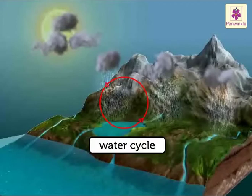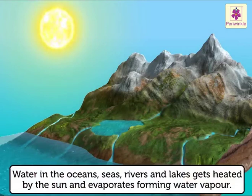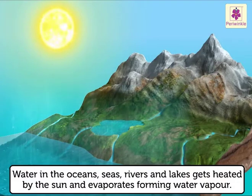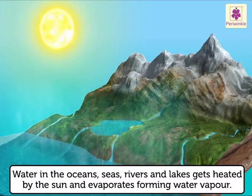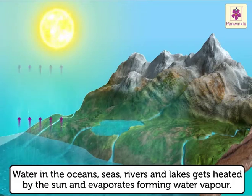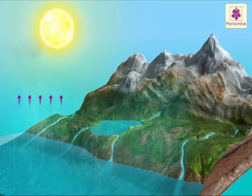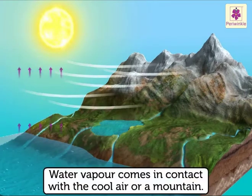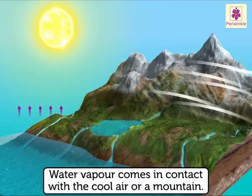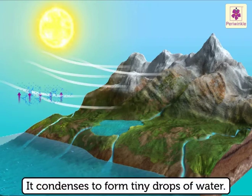Let us look at the water cycle. Water in the oceans, seas, rivers, and lakes gets heated by the sun and evaporates, forming water vapour. Water vapour rises up. When this water vapour comes in contact with the cool air or a mountain, it condenses to form tiny drops of water.